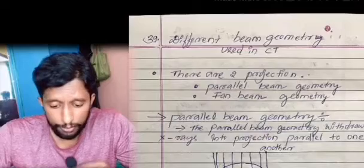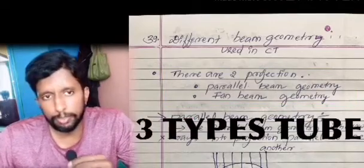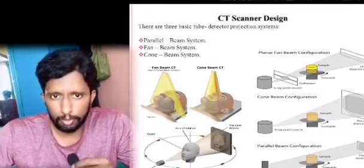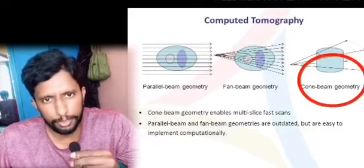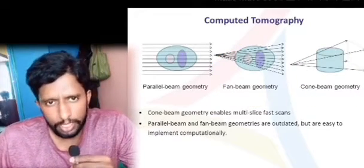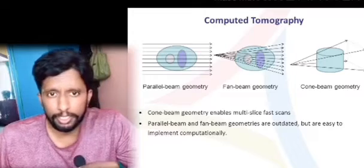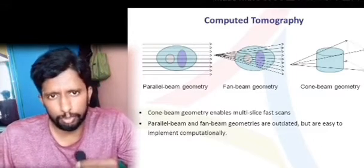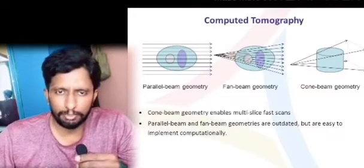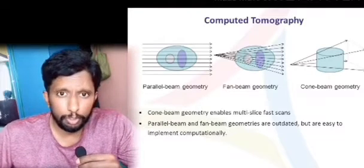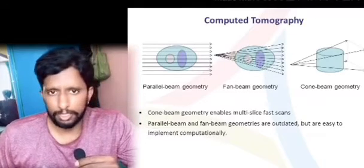Different beam geometries are used in CT. There are three types: parallel beam geometry, fan beam geometry, and cone beam geometry. Each has a distinct projection pattern, and all three are clearly illustrated in their respective diagrams.